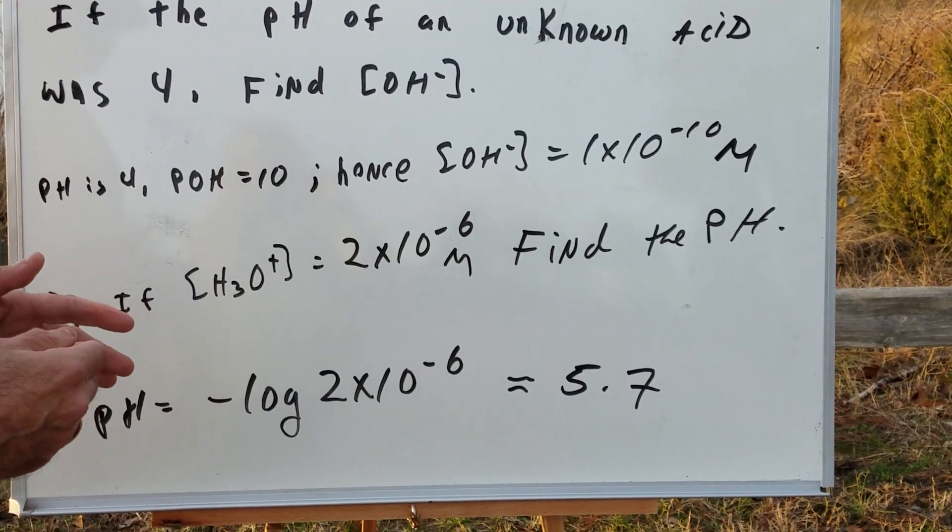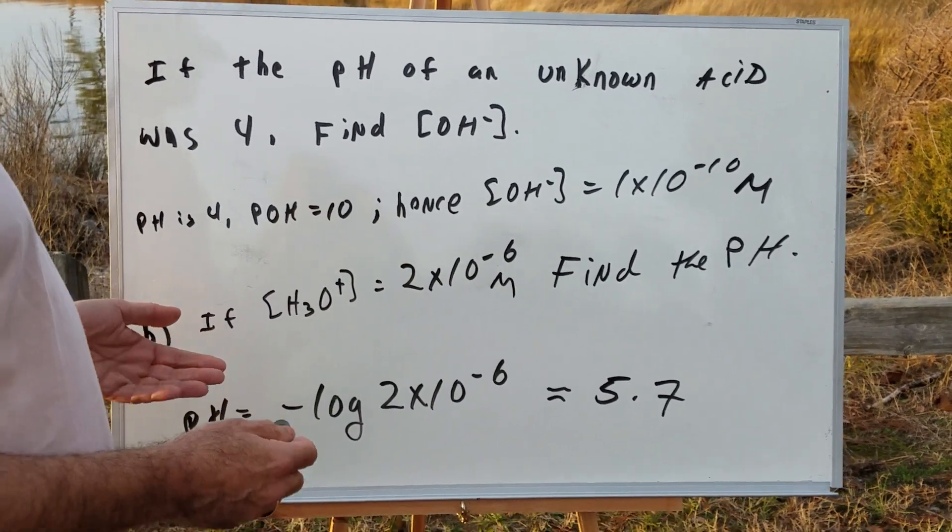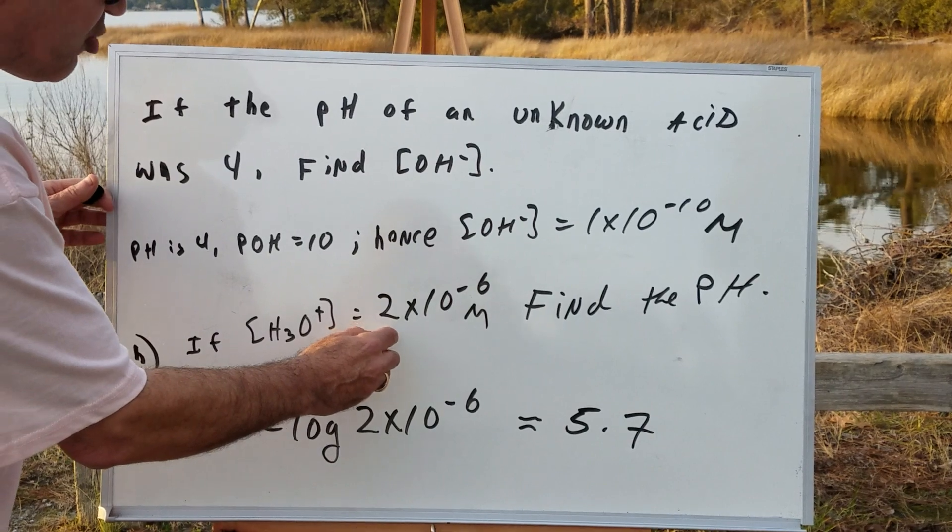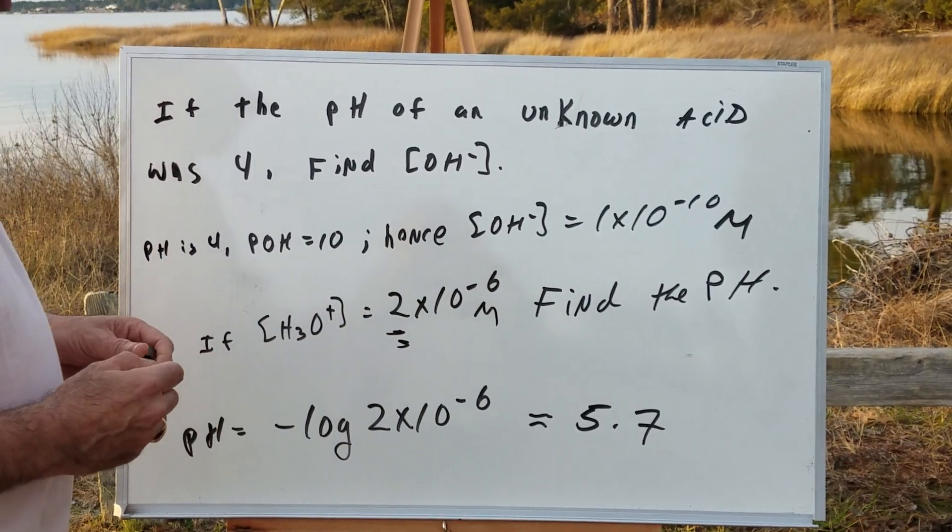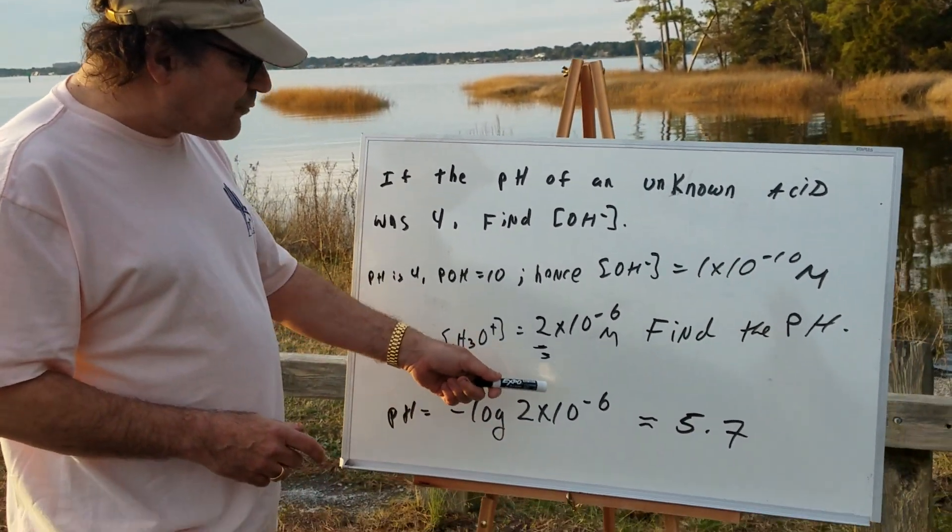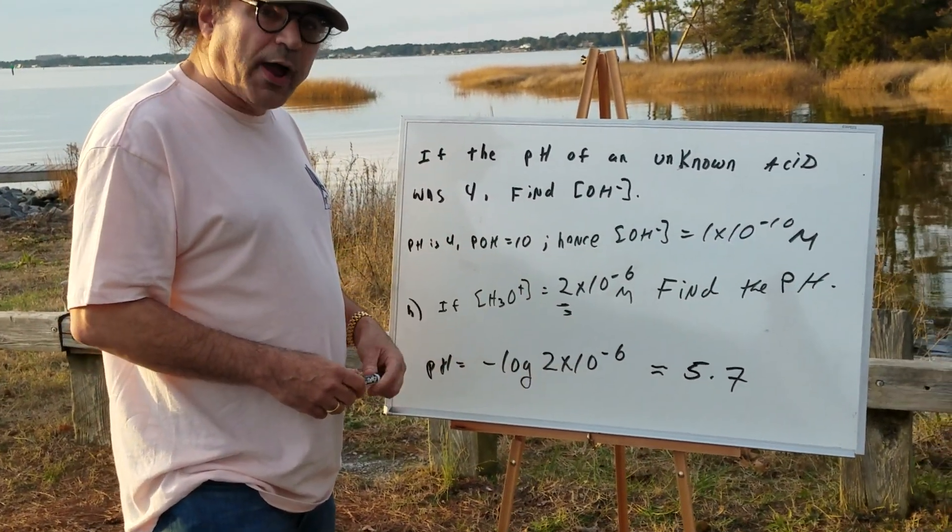Now, if it was 1 times 10 to the minus 6th, the answer would be 6 because you would simply raise it to the power of 10. But since this is a 2, that means the answer will be a little bit less than 6. So minus the log of 2 times 10 to the minus 6th would be 5.7.